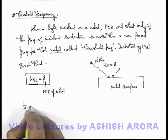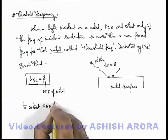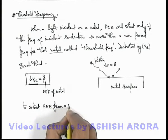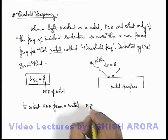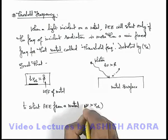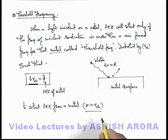So to start photoelectric effect from a metal, we must have the frequency of incident radiation more than the threshold frequency such that its photon energy will be more than the work function. This is how threshold frequency is defined, and for every metal this threshold frequency is different.